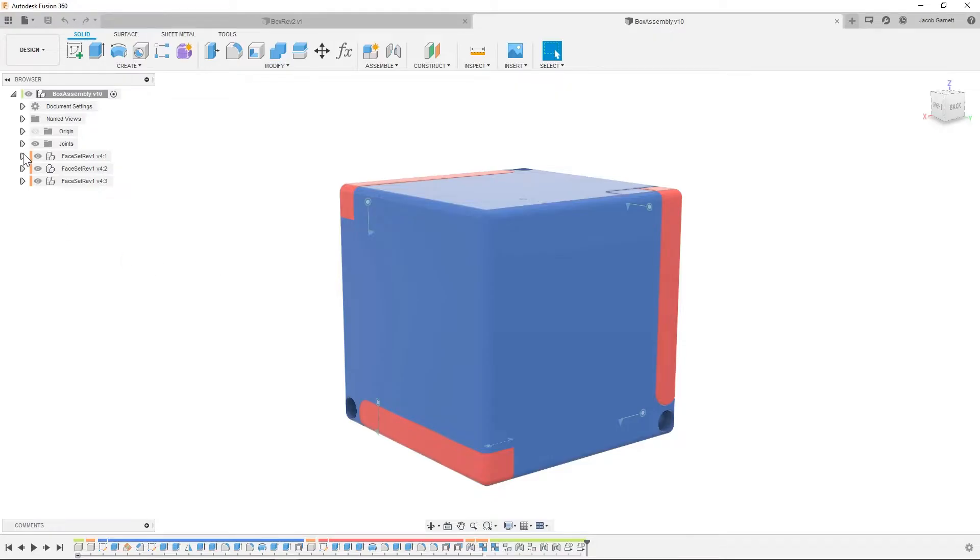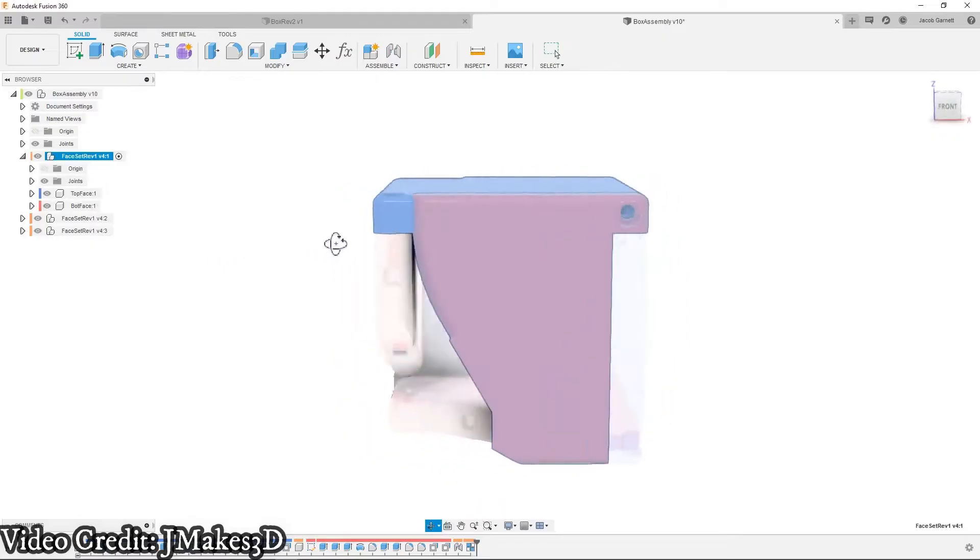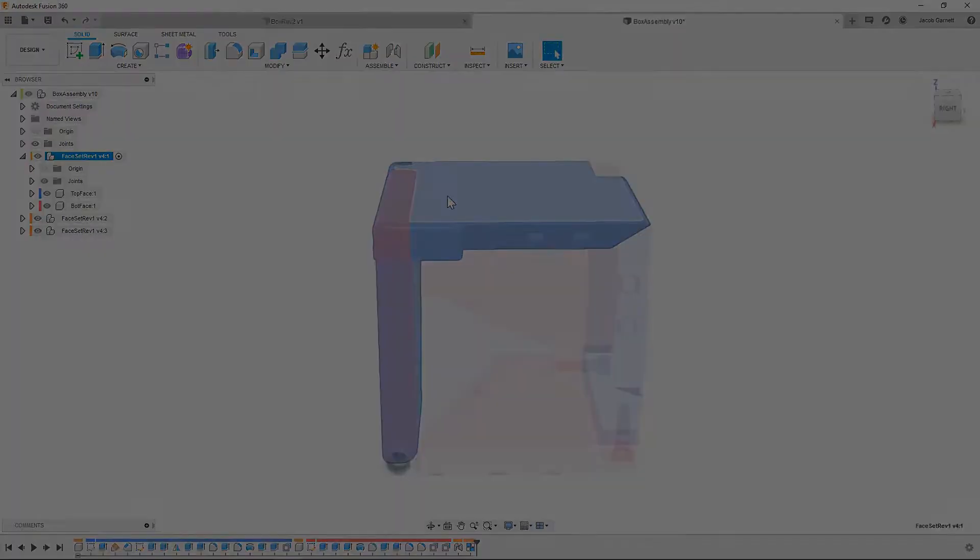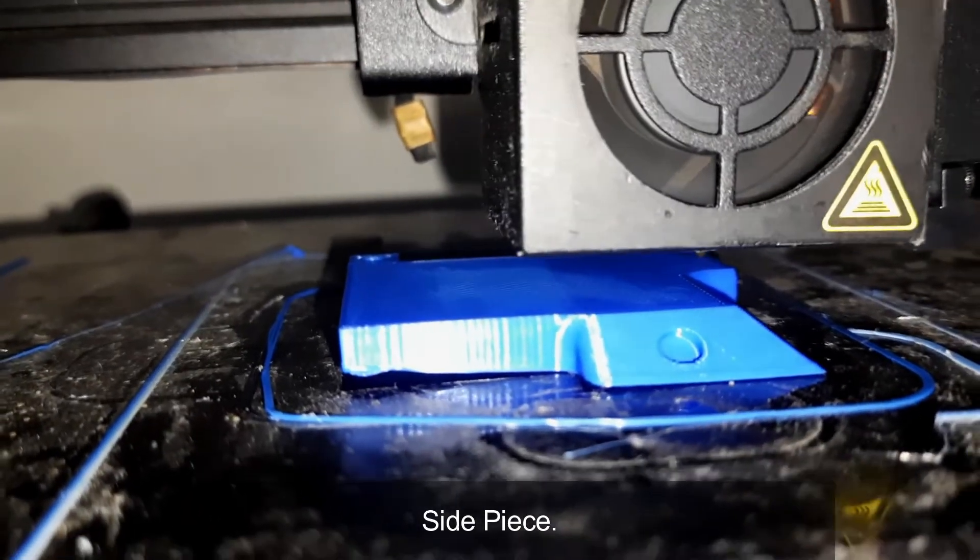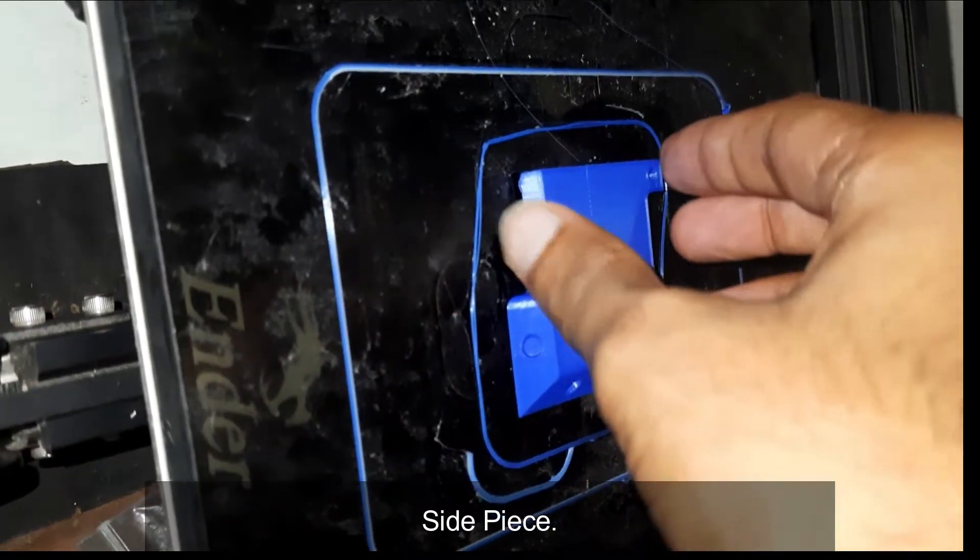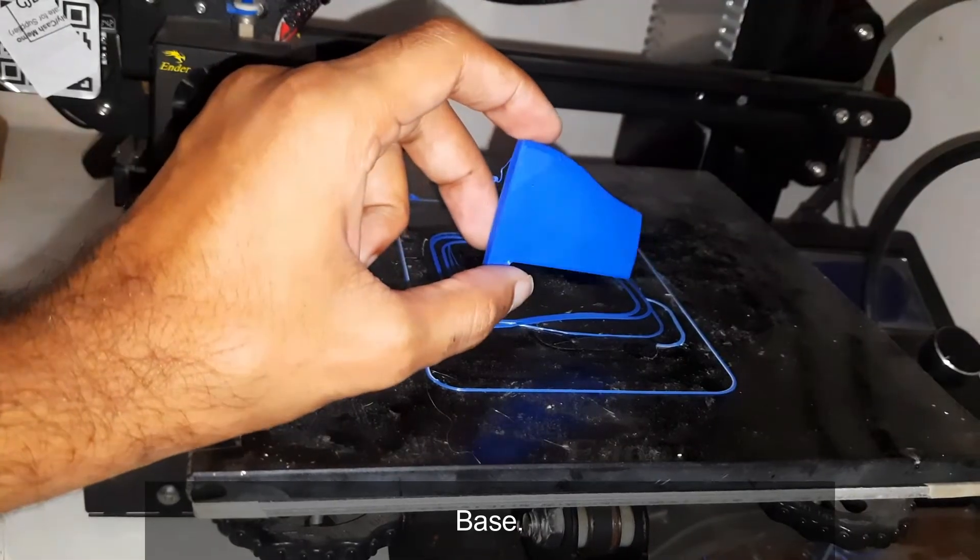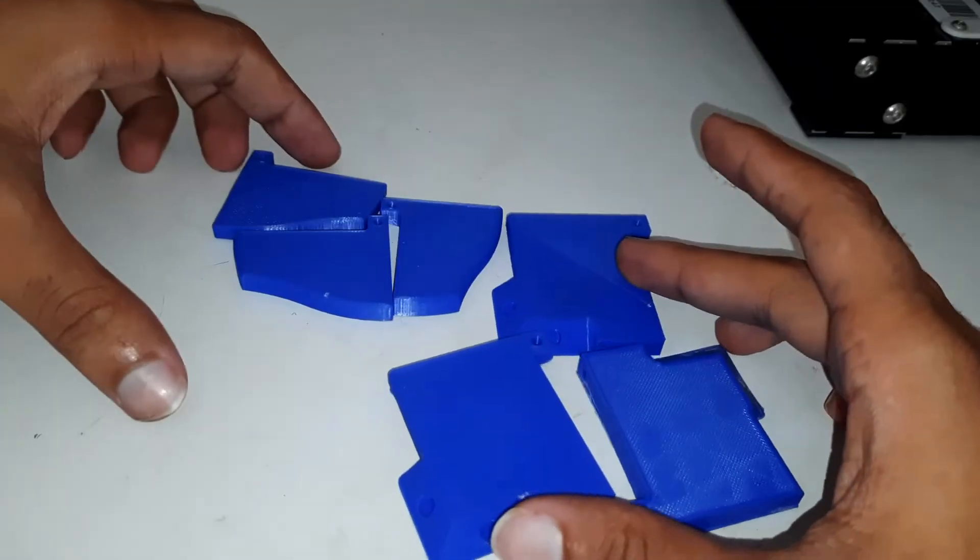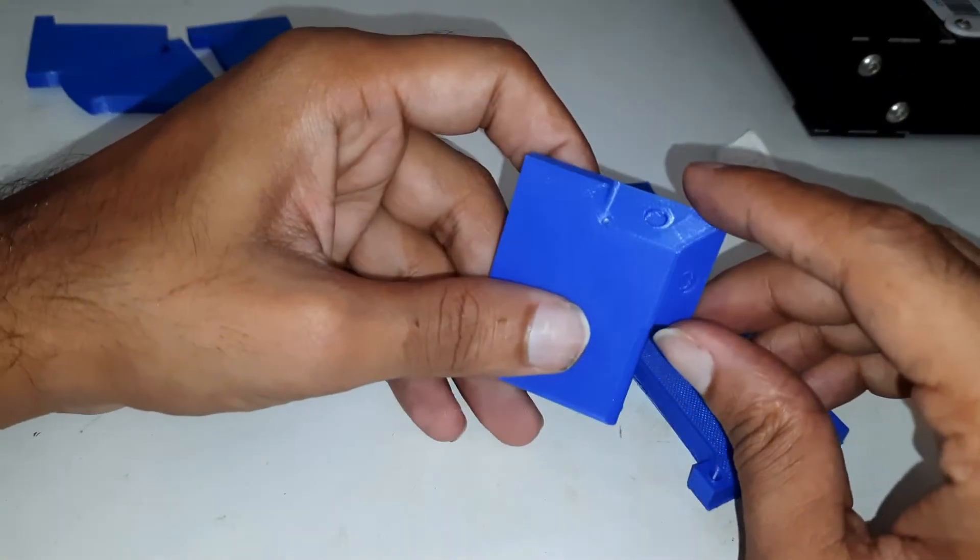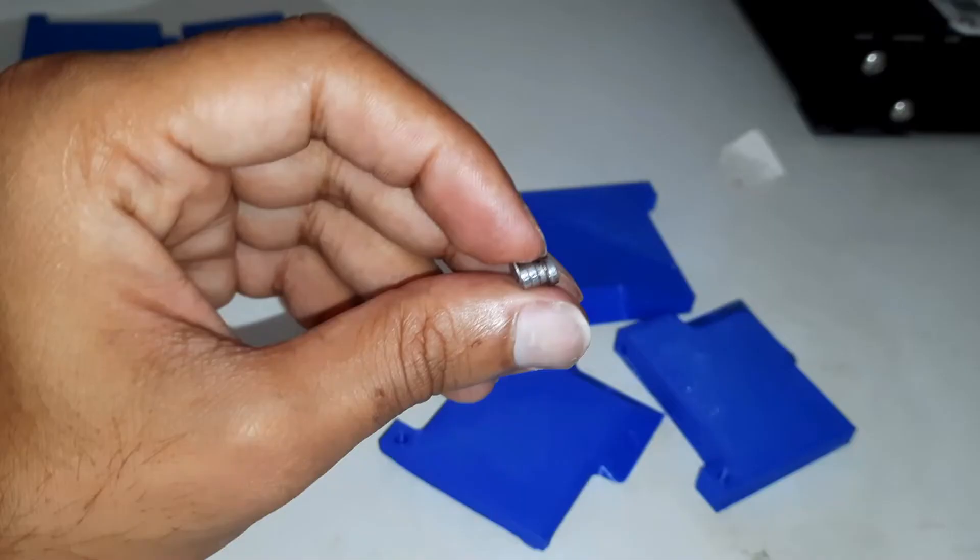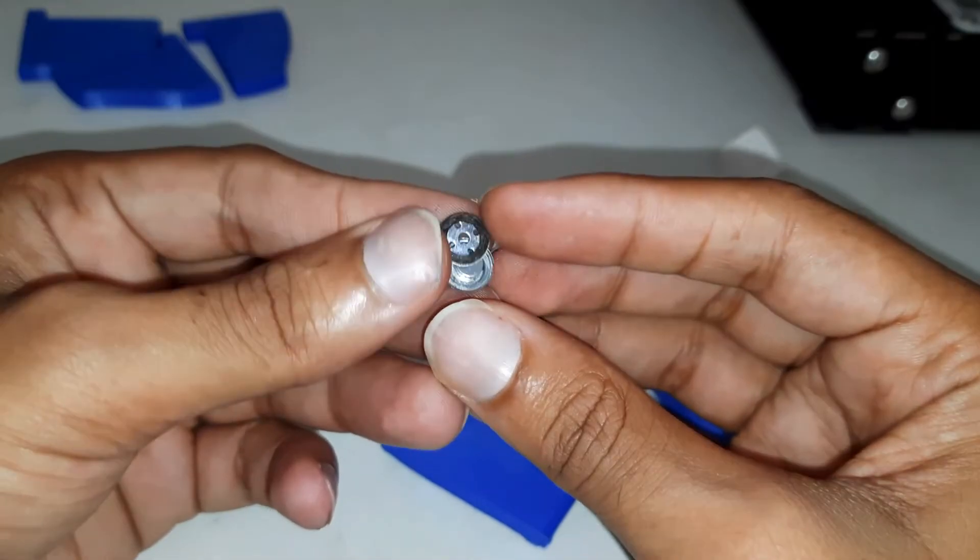So here in this video I am going to make, or I should say print, a kinetic box. You will find this STL file in the description. There are total six pieces. We have to print three of them as the side pieces while the rest of them, three, is the base. I got these neodymium magnets from the earphone speakers.